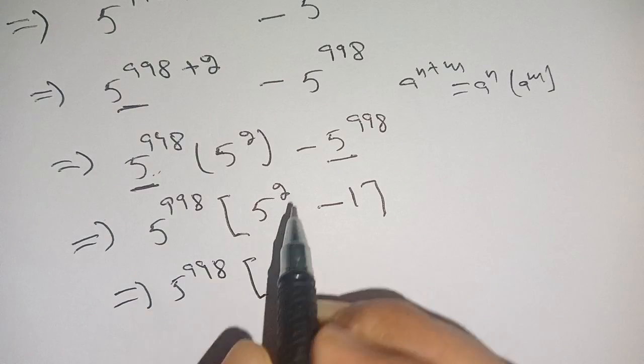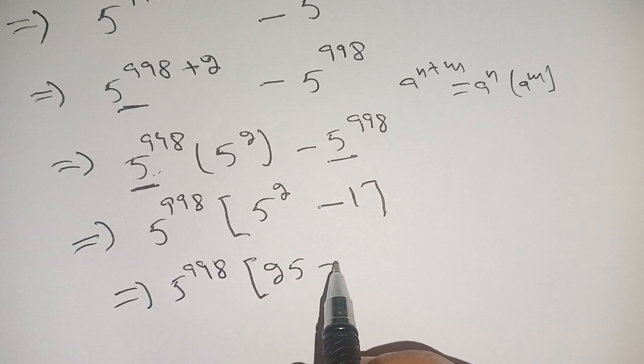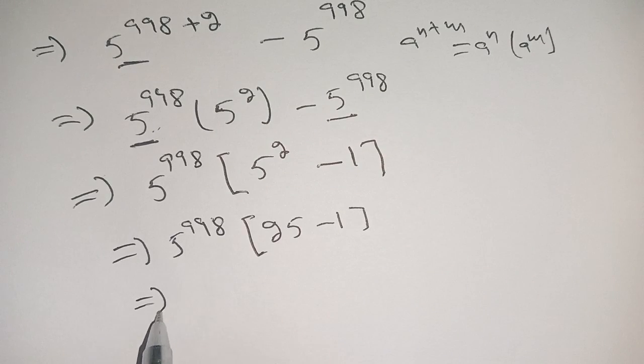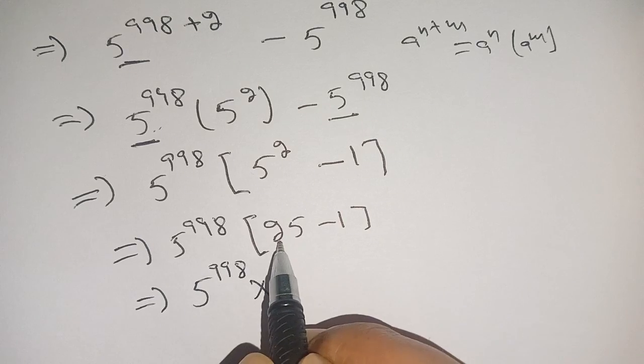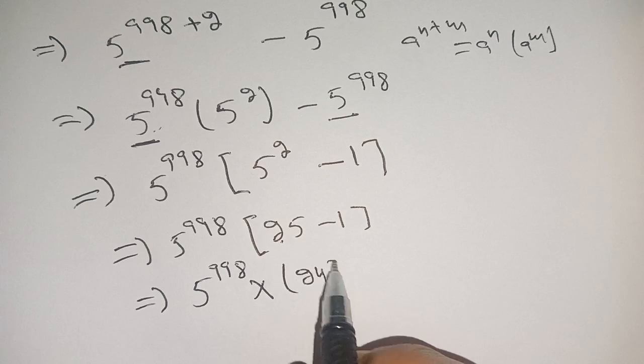We get 5 power 998 times 5 square, which means 25 minus 1. So we get 5 power 998 times 25 minus 1, which becomes 24.